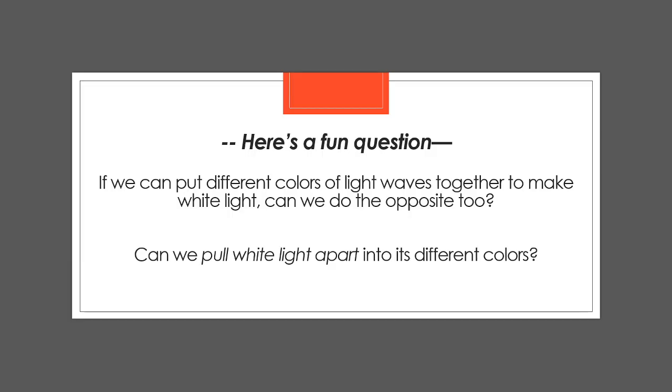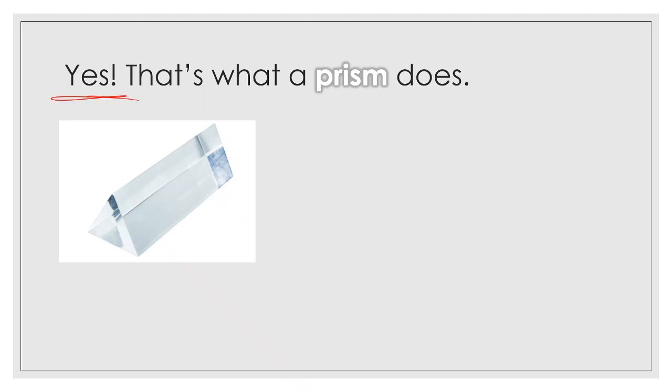Now, hopefully that makes sense. Now that we know that white light is made of all that other stuff, we have a fun question we can ask. If we can put different colors of light waves together to make white light, can we do the opposite too? Can we pull white light apart into its different colors? Instead of putting those colors together to make white, can we pull white apart and separate out the different colors? Well, the answer is actually yes. That is what a prism does. You may not have ever seen this word prism before. You should know what it is after this lesson. This thing right here is an example of a prism. It's kind of an angled, triangular-shaped piece of glass.